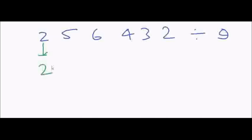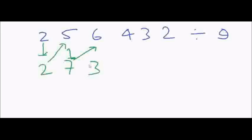Then 2 plus 5 is 7, then 7 plus 6 is 13 — write 3, carry 1. Then 13 plus 4 is 17 — carry 1. Then 17 plus 3 is 20 — carry 2. Then 20 plus 2 is 22.